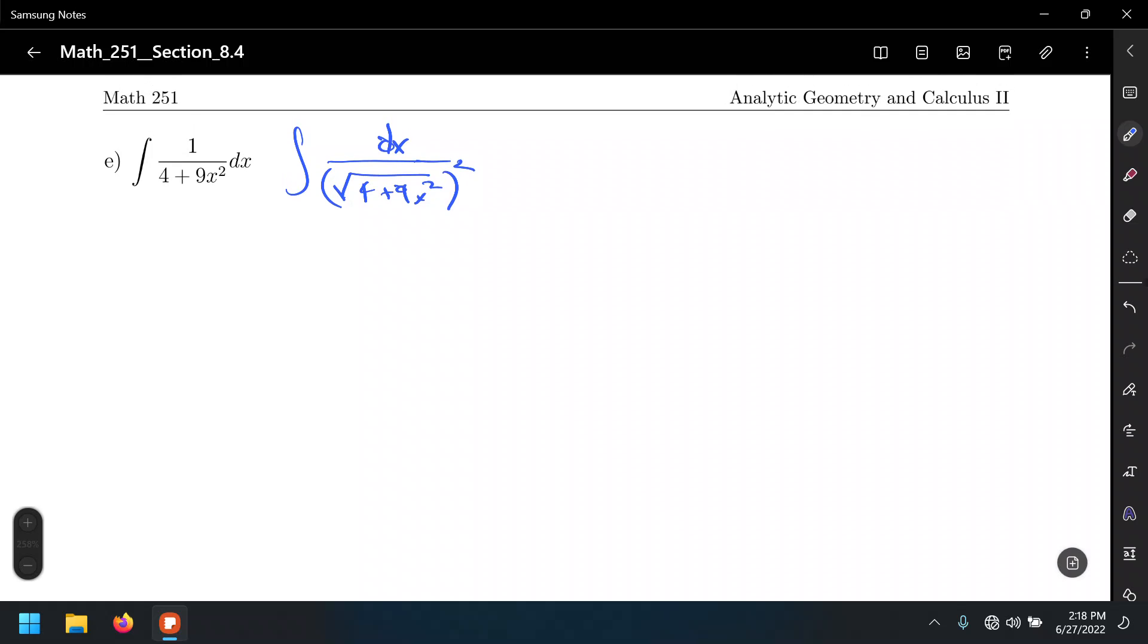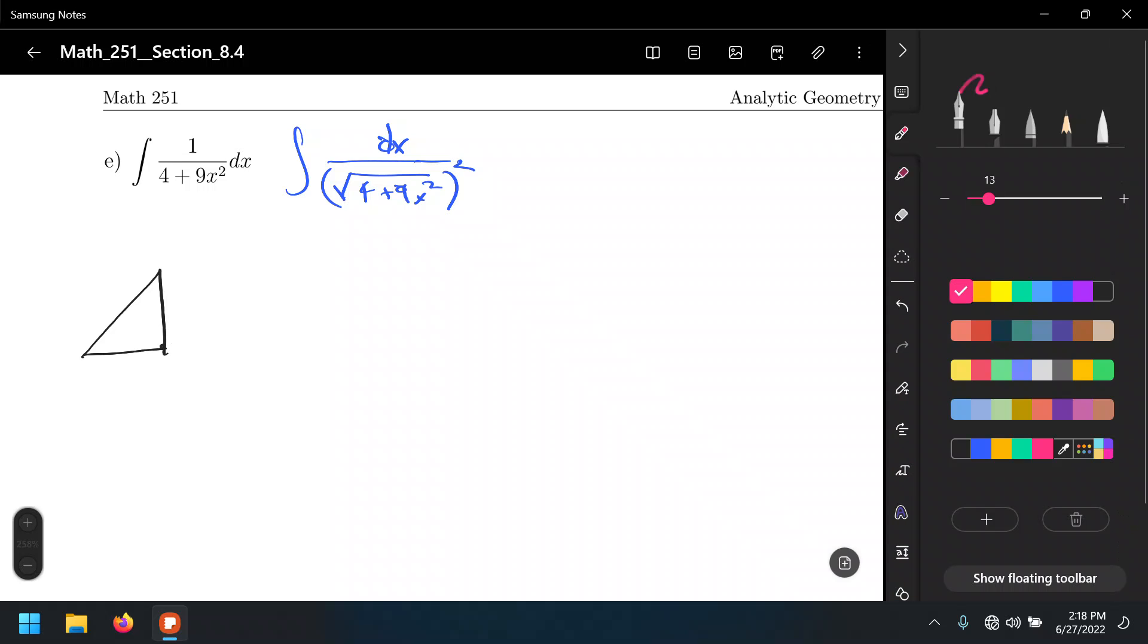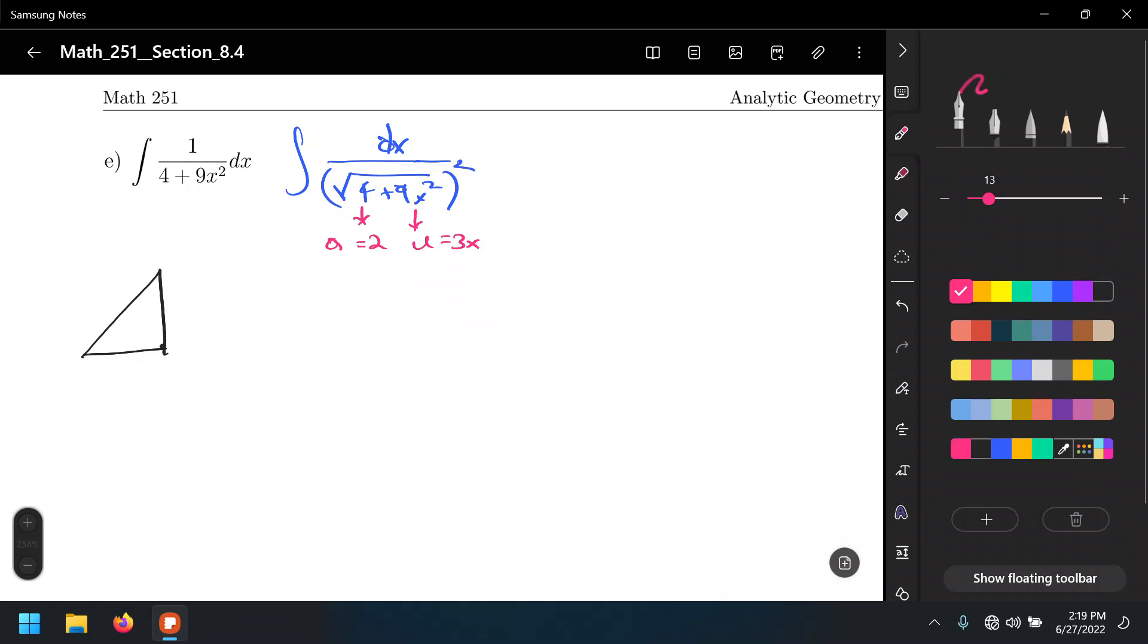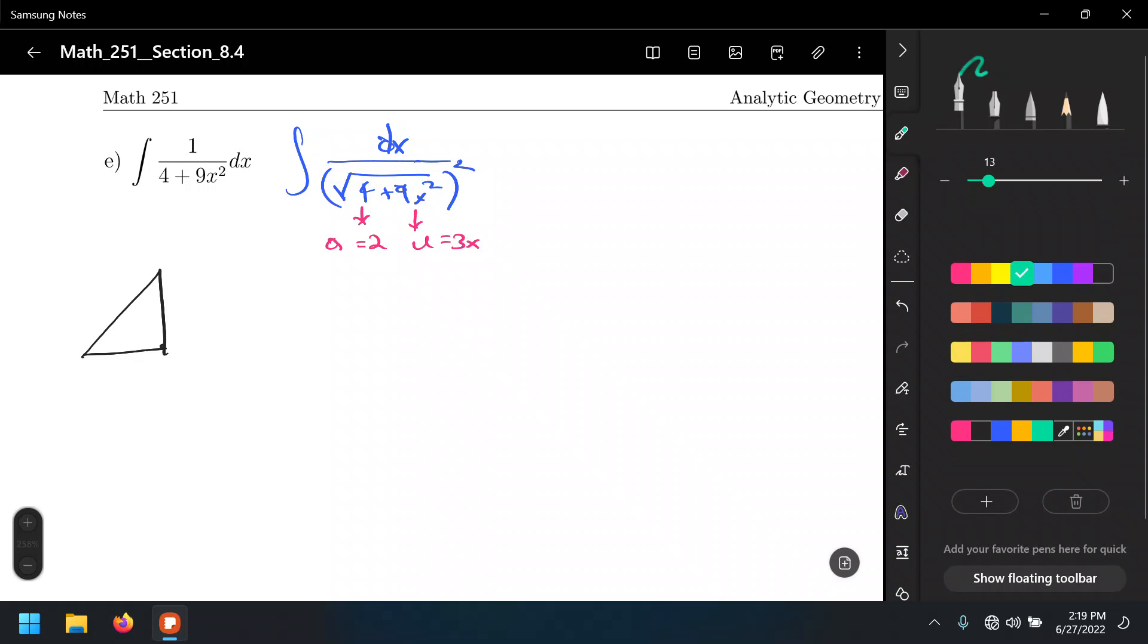Well, so now we need to get back to the usual. Do we have a sum of squares, do we have a difference of squares? It's a sum of squares. So let's set up the triangle, and in this case that means our a equals 2 and u equals 3x.